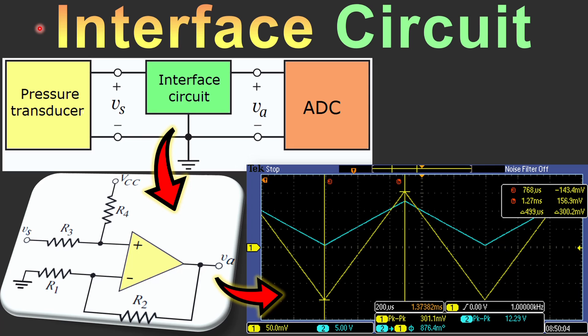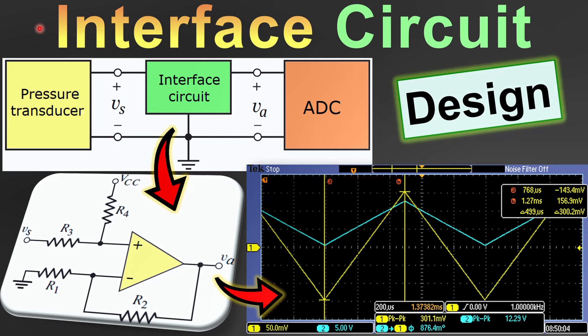Welcome to a new video about circuit design. In this example we will discuss the design of an interface circuit, going through it step by step with calculations and simulation in SPICE, and we will also show the measurement results. This will be a very interesting example showing the connection between a sensor and an ADC, which is an analog-to-digital converter, with the interface circuit we need to design in between.